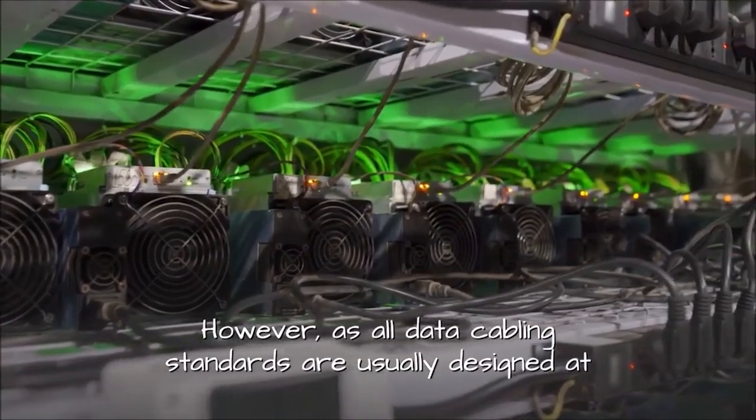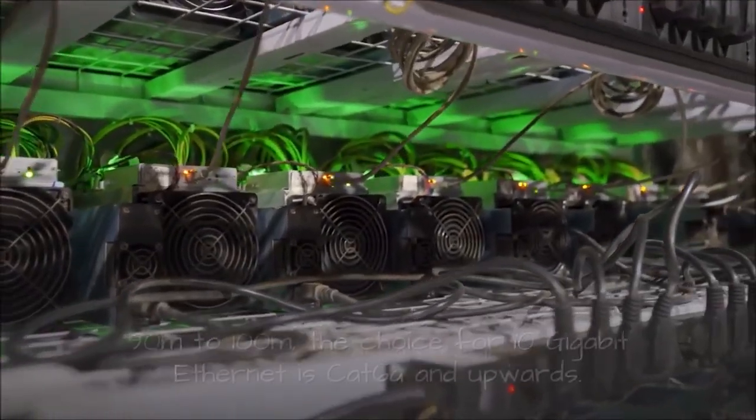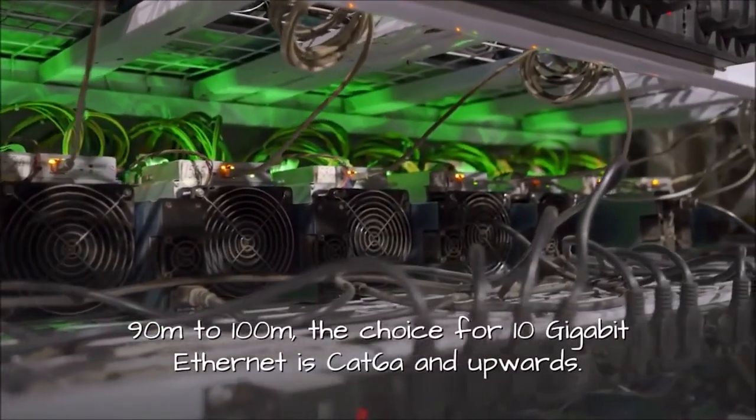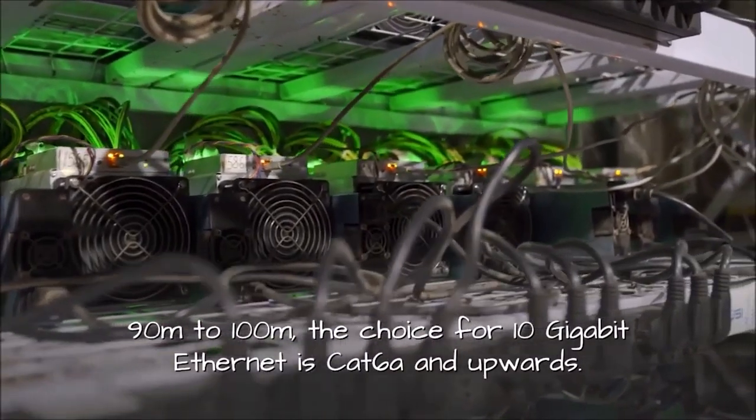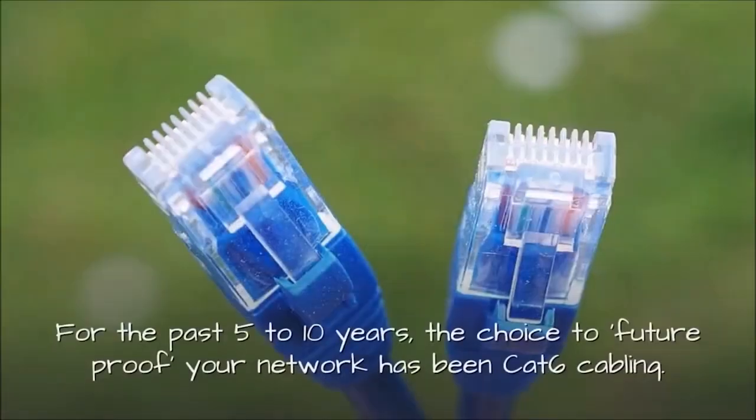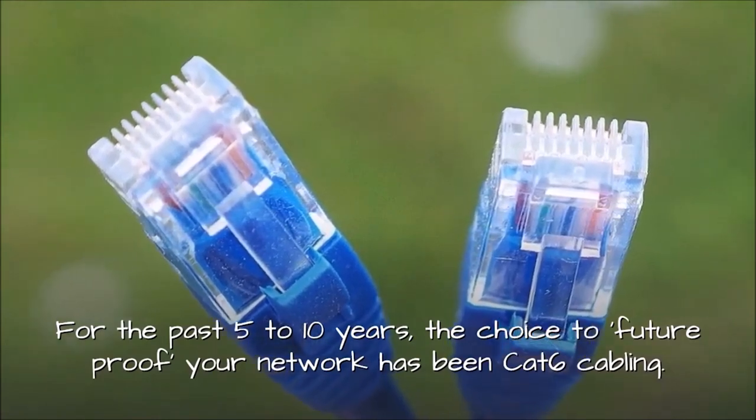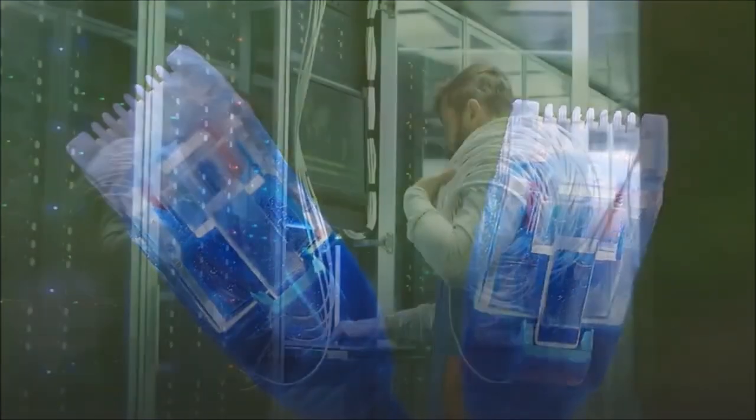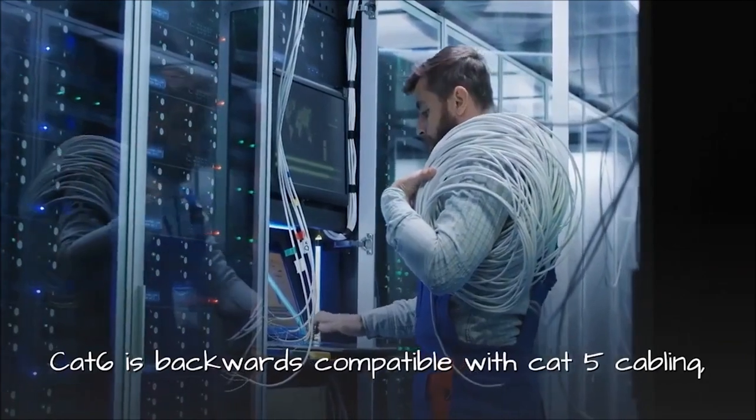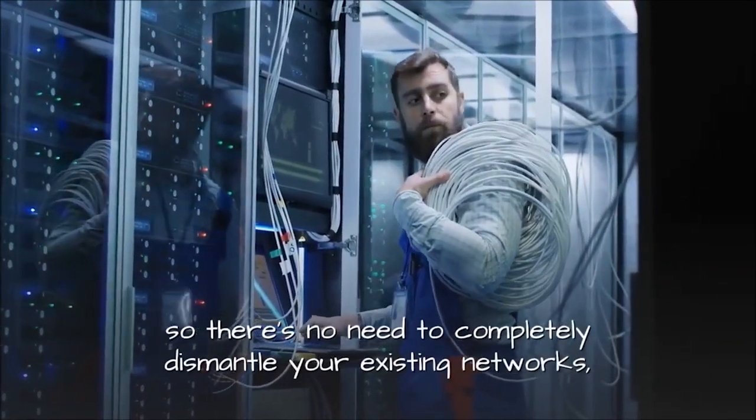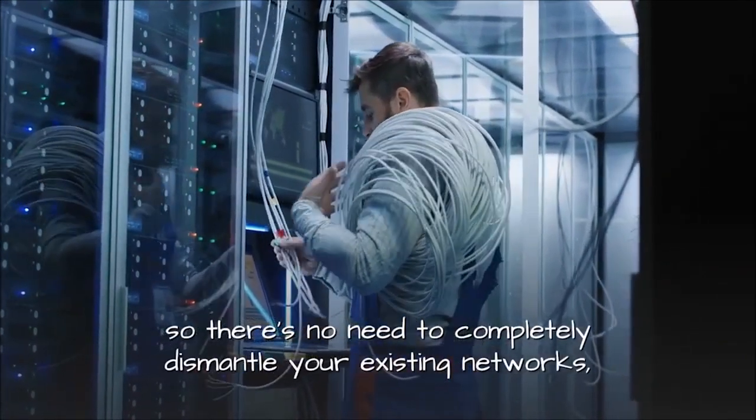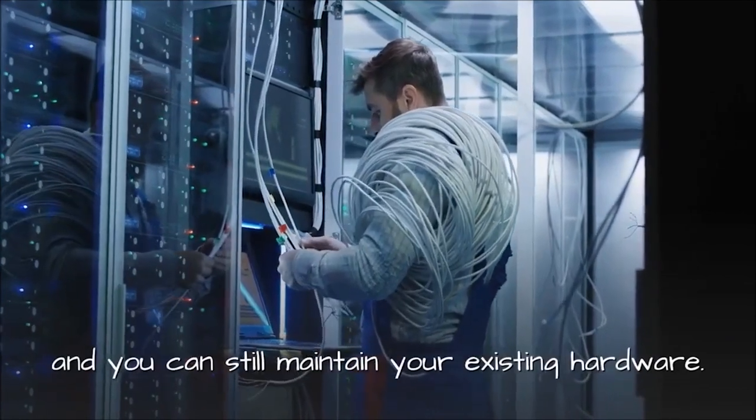However, as all data cabling standards are usually designed at 90 meters to 100 meters, the choice for 10 gigabit ethernet is CAT6e and upwards. For the past 5 to 10 years, the choice to future proof your network has been CAT6 cabling. CAT6 is backwards compatible with CAT5 cabling, so there's no need to completely dismantle your existing networks and you can still maintain your existing hardware.